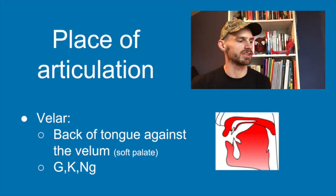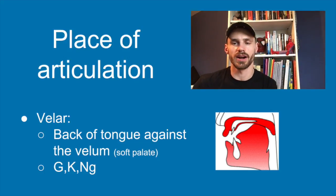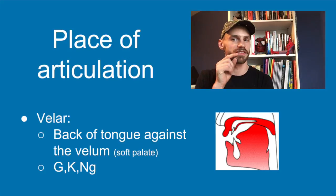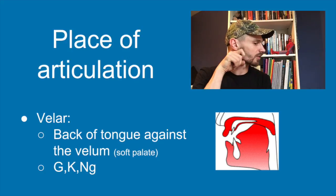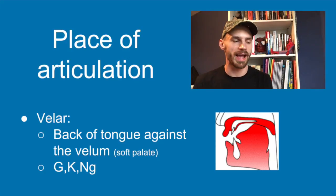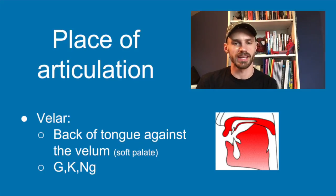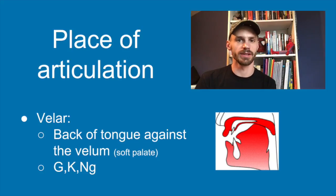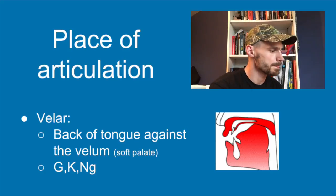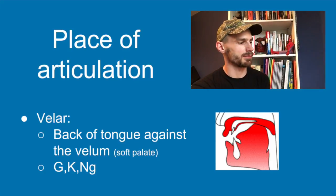Velar sounds take place in the back of your mouth. With the other sounds you're using the front tip of your tongue, but with velars the body or back of your tongue goes up against your velum, which is towards the back of your mouth. We have three velar sounds in English: g, k, and the 'ng' sound — like at the end of the word 'song.' That's not an n and a g combined; that's one single sound.